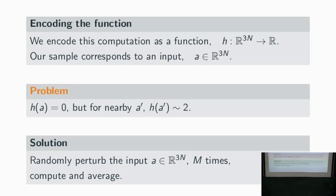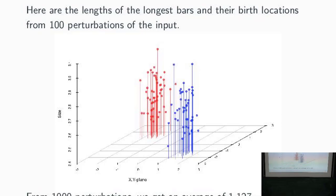The whole story is really this very simple idea — our solution: randomly perturb the input, do that m times, repeat the calculation, and average. We do this a hundred times and get a representation of where the longest bars end up being born. Roughly half are in the second quadrant, roughly half in the fourth quadrant. Our function returns the length if the bar is born in the appropriate quadrant, otherwise returning zero.